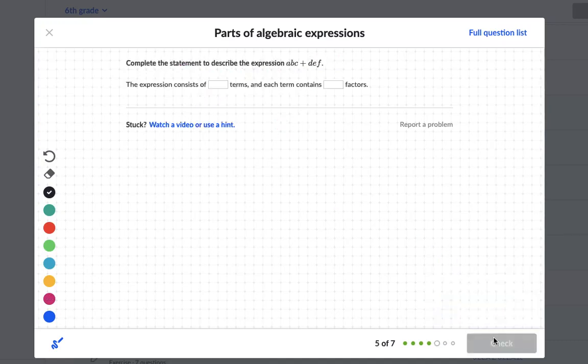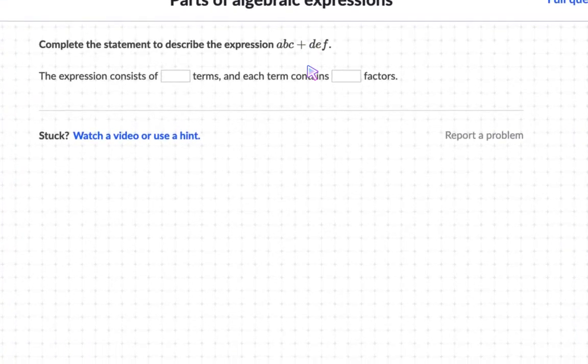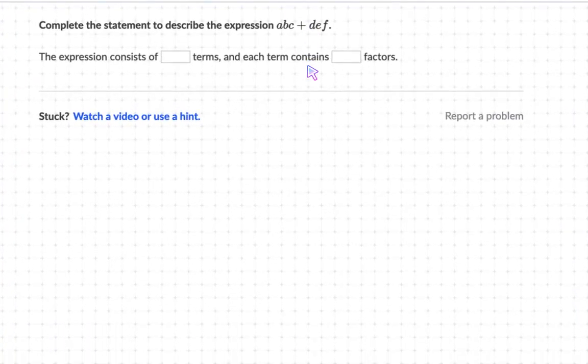Let's try one last one. Alright. Complete the statement to describe the expression a times b times c or abc plus def. The expression contains blank terms. So how many terms. And each term contains blank factors. So how many factors in each term. Pause the video and try it on your own first.